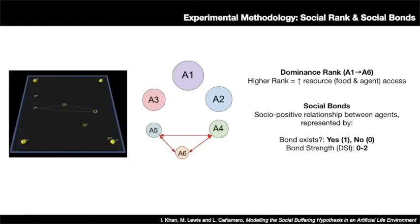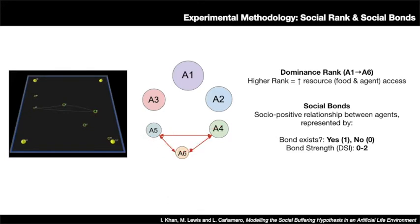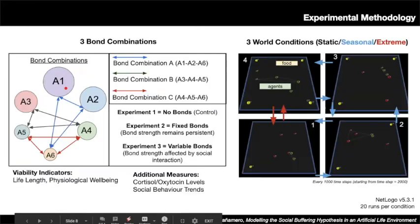We set up a society of six agents, each with a different dominance rank from A1 to A6. A higher rank is associated with increased access to resources — food resources are shown as yellow spheres and other agents as green donut shapes. We model a social bond as a socio-positive relationship between bonded agents, represented by two values: a boolean flag for whether the bond exists, and the bond strength called the DSI (dyadic strength index), which ranges from 0 to 2.